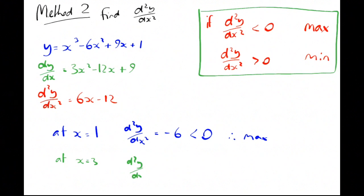At our other point, x is 3, the second derivative is going to be 6, which is positive. So therefore, it's a minimum.